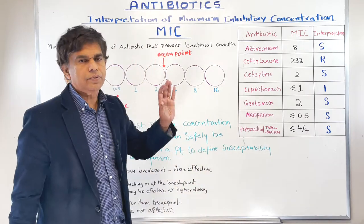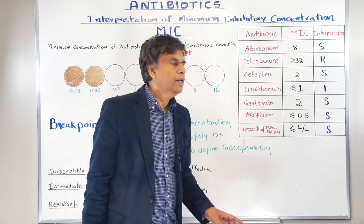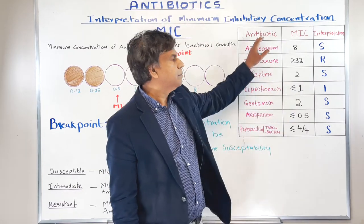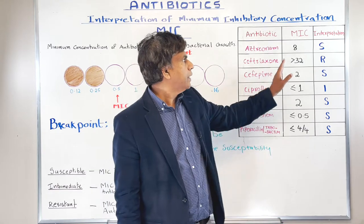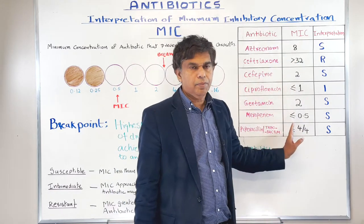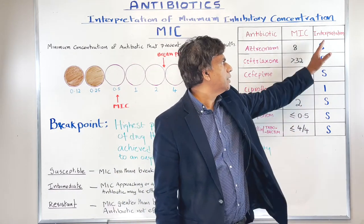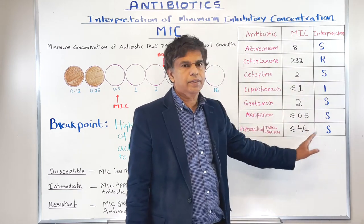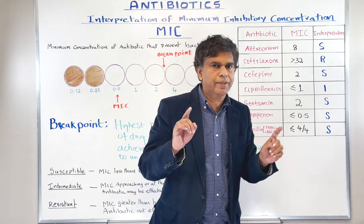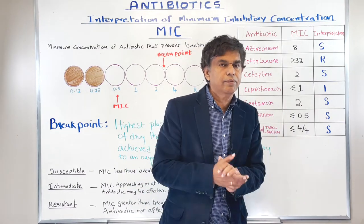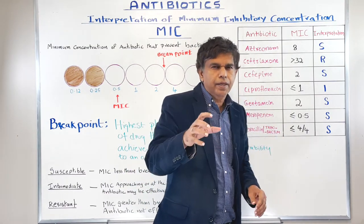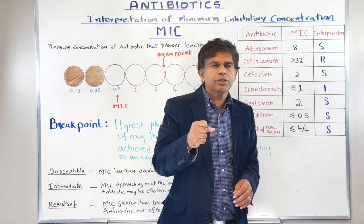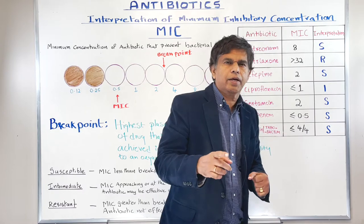When you send results to the lab, you get a chart back showing a lot of antibiotics listed. You'll see the antibiotic name, the MIC value, and an interpretation — S, I, or R. We'll come back to what those mean. The key is understanding how to interpret that chart, because we need to identify the bacteria and find the specific antibiotic that can destroy that organism.